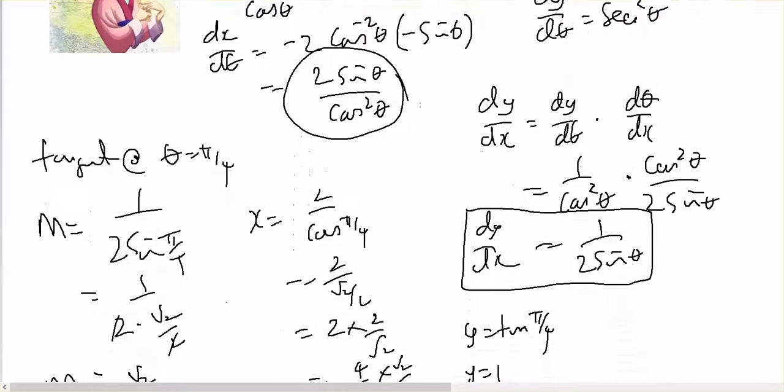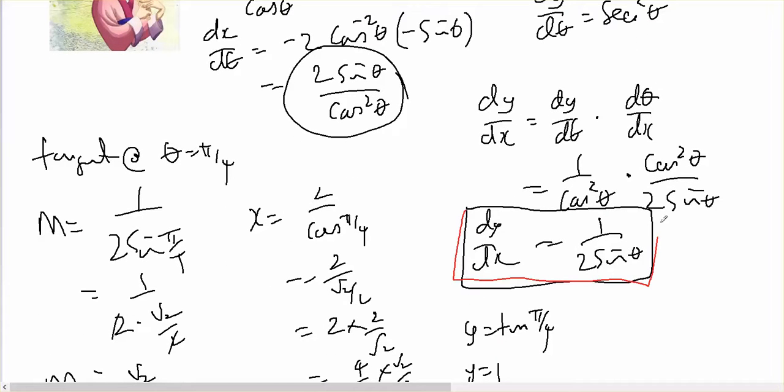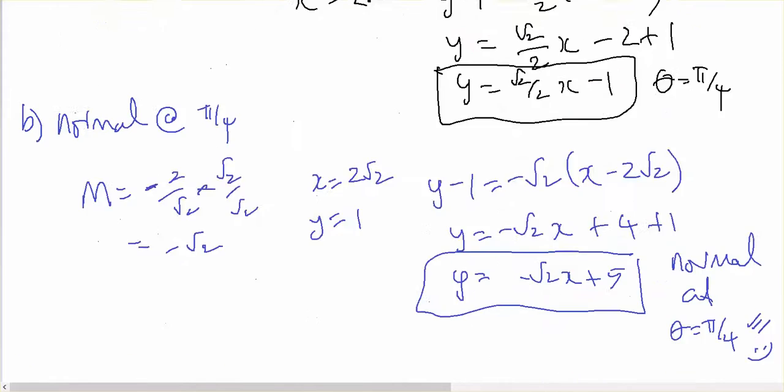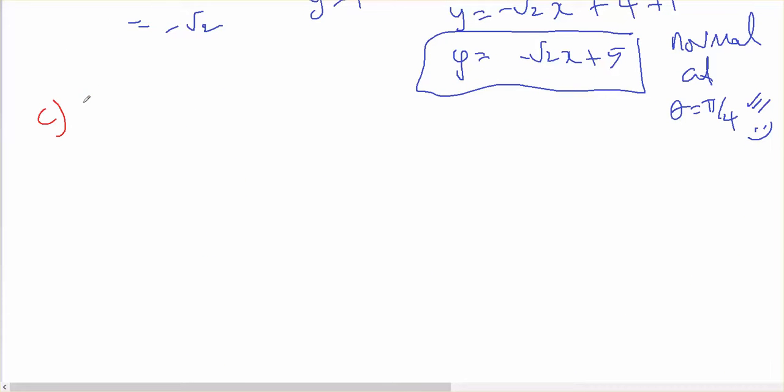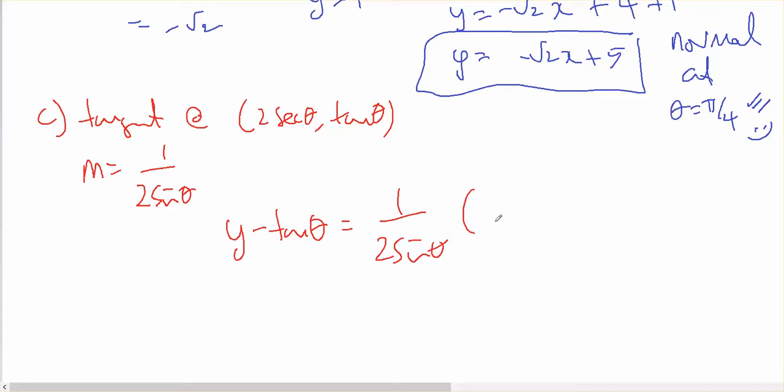Okay, so I know that the gradient is equal to this. So for part C, tangent at 2 sec theta tan theta, and I know that the gradient equals 1 over 2 sine theta. So y minus tan theta equals 1 over 2 sine theta, x minus 2 over cos theta.